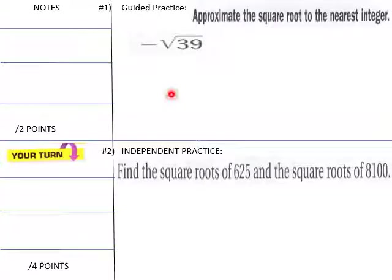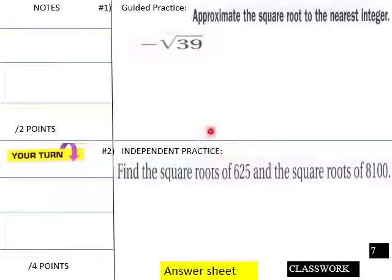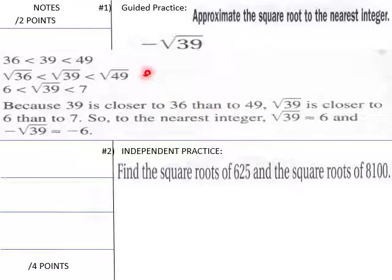Moving into our guided practice here. Approximate the square root to the nearest integer, and find the square roots of 625 and the square roots of 8100. That's your independent practice. We're going to do this one up here: the negative of the square root of 39. So the negative square root of 39, you got 36, perfect square. 49 is the perfect square. So which number is 39 closer to? It's obviously closer to 36.